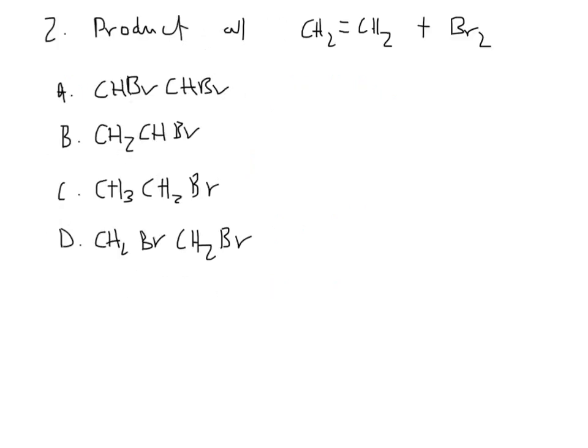Number two wants to know, what's the product of ethene, CH2CH2 with BR2? So remember, this double bond here would open up and give you a place for bromine to fit onto each of the carbons. The two hydrogens would remain with each one, so CH2BRCH2BR would be our product, and that's a dihalogeno alkane.